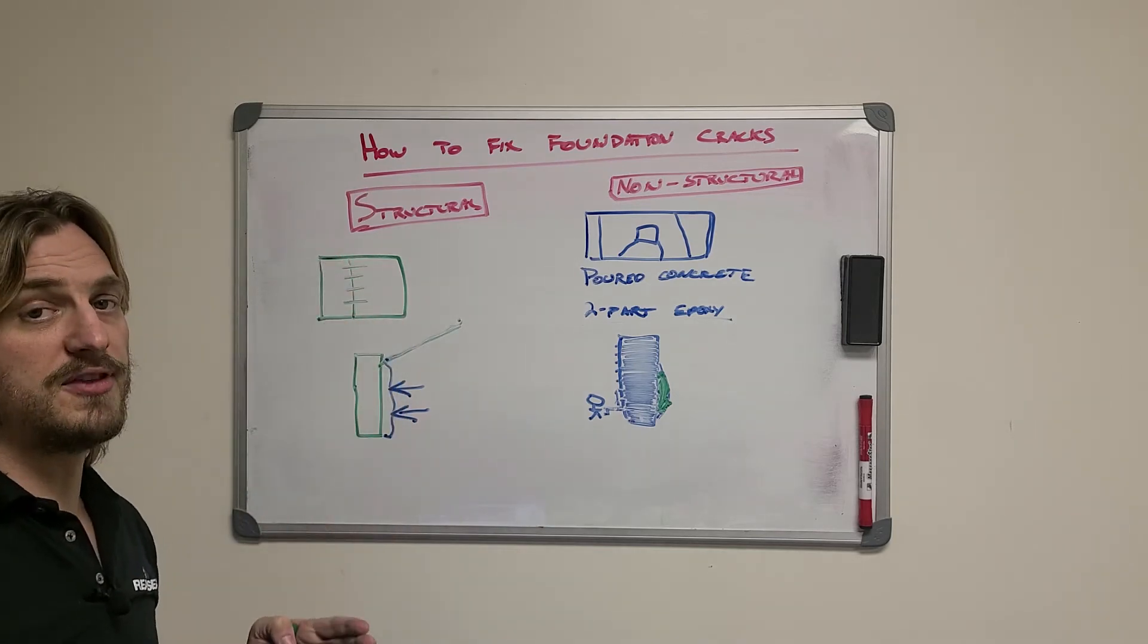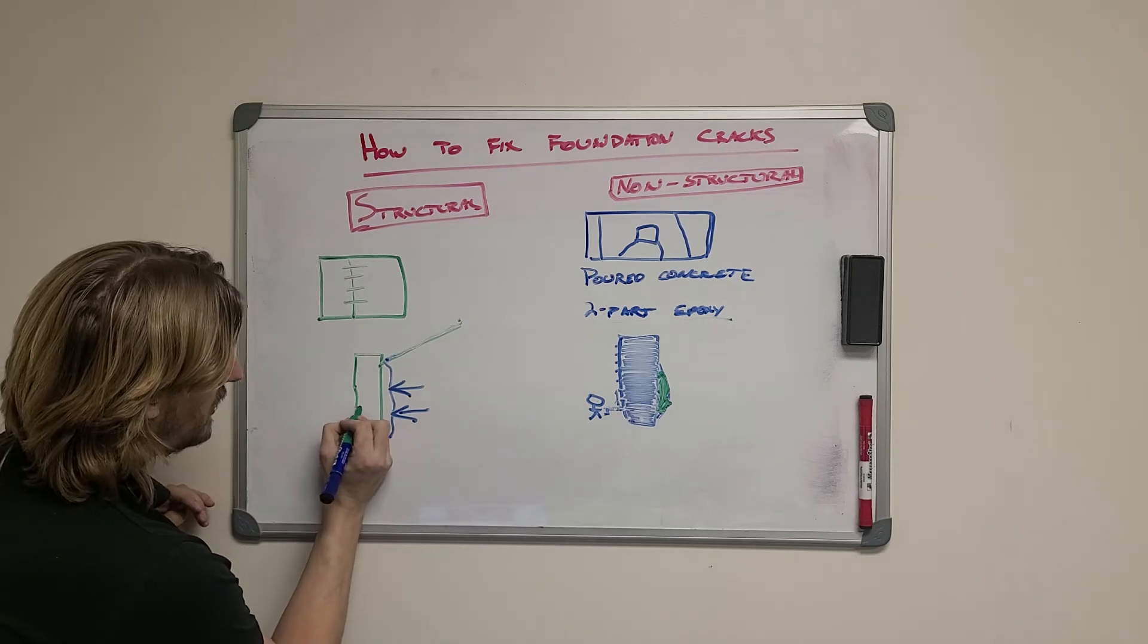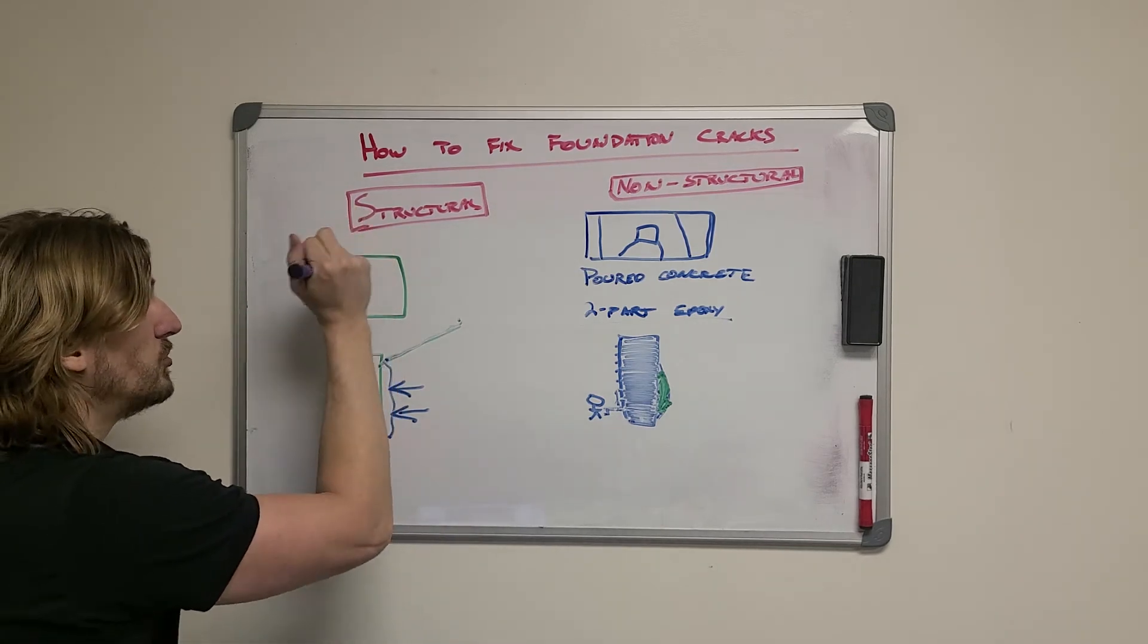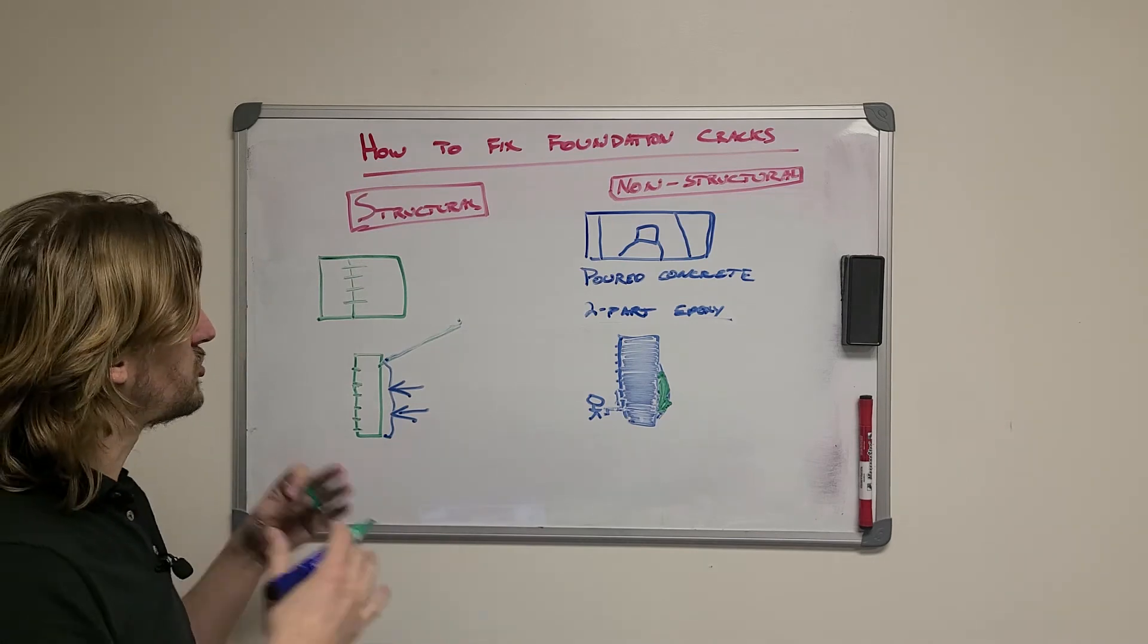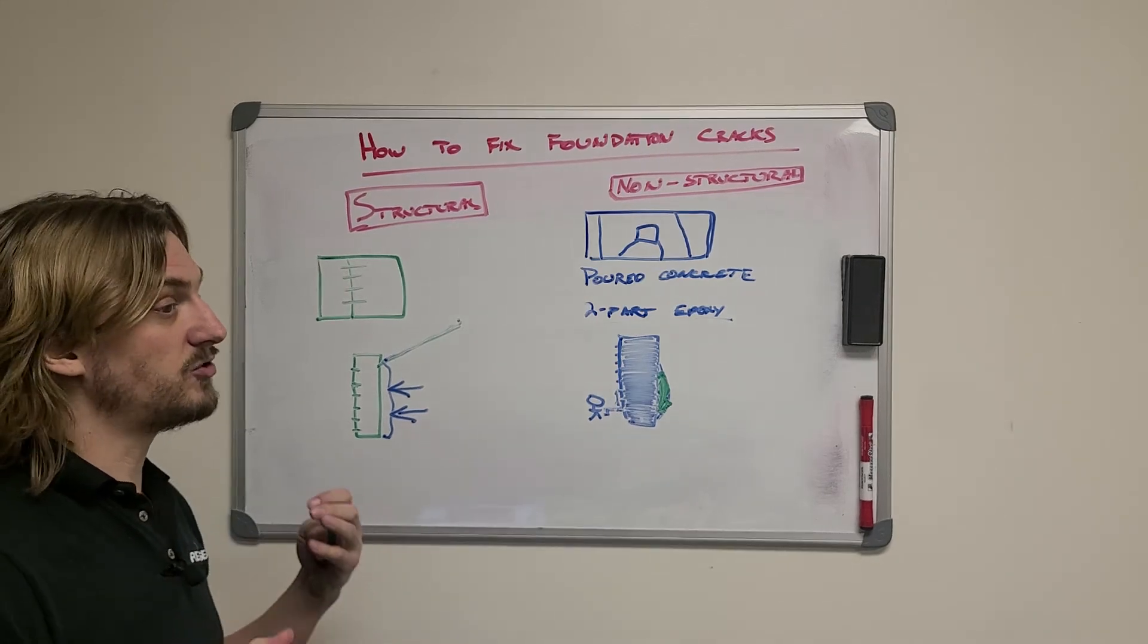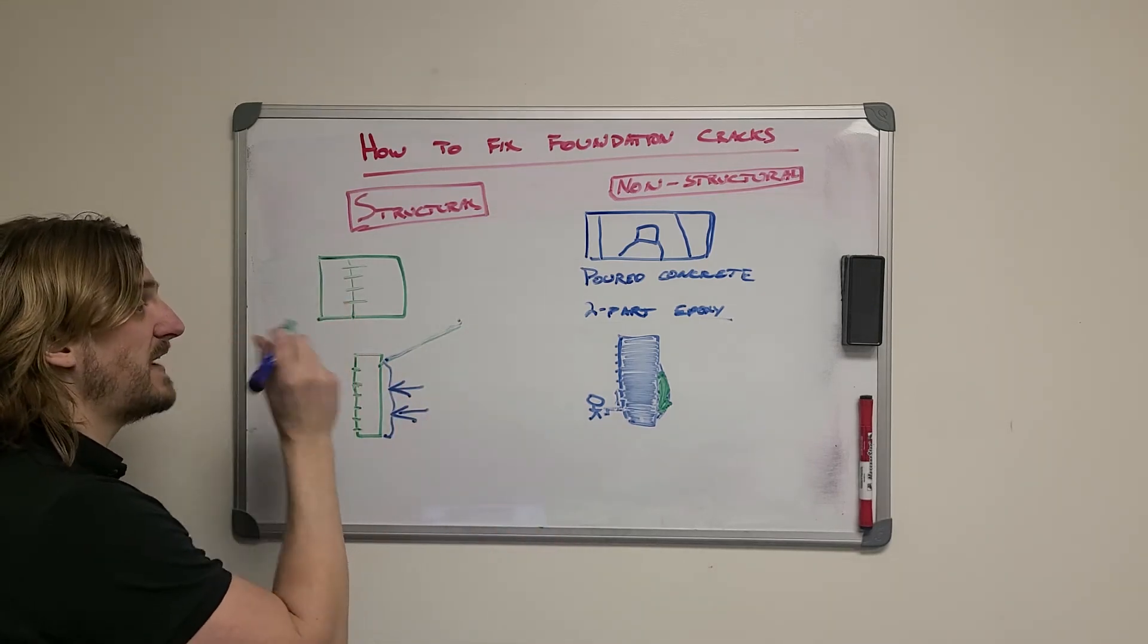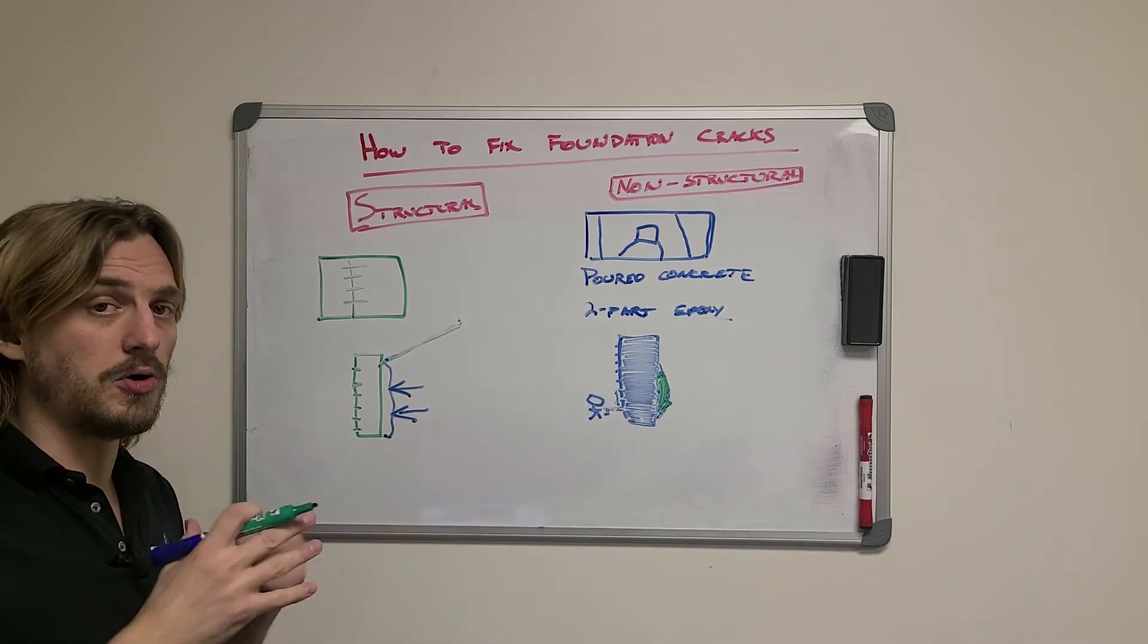They're carbon fiber staples that we actually grind into the wall here along the path of the foundation crack. We epoxy them into the wall and it actually holds that together, kind of like stitches on your wound, and creates a much stronger repair. If you've had a crack where you've had companies come out two, three times to repair the crack because it keeps opening and that wall isn't otherwise moving, grid stitch is a fantastic solution to stop that movement of the crack and hold it together.